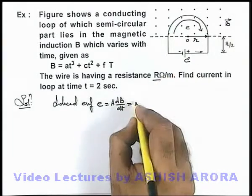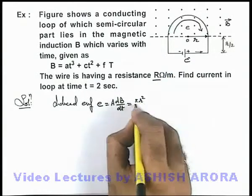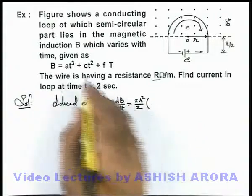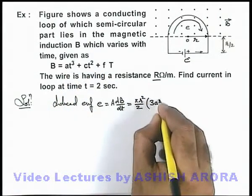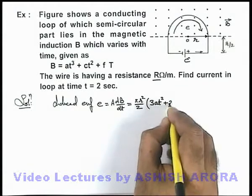And the area in this situation is πr²/2, that of a semicircle. And dB/dt from this expression we can write 3at² + 2ct.